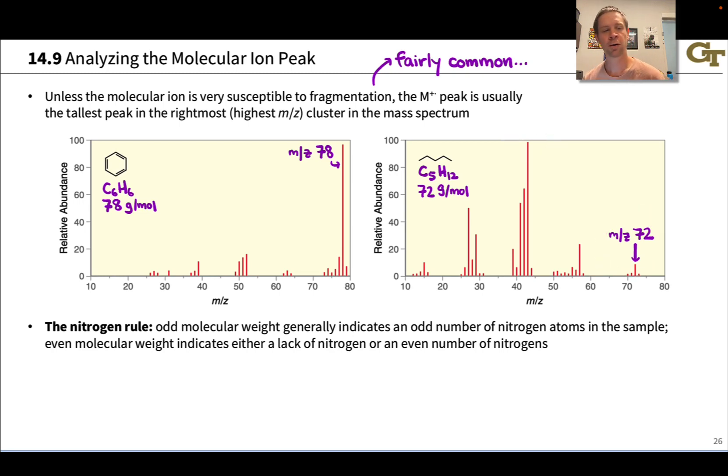From the molecular ion's mass to charge ratio and what's called the nitrogen rule, we can get a sense of the number of nitrogens in the compound. Odd molecular weight typically indicates an odd number of nitrogen atoms in the sample.